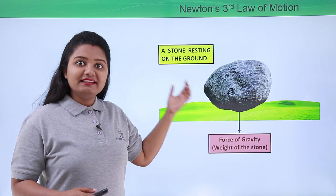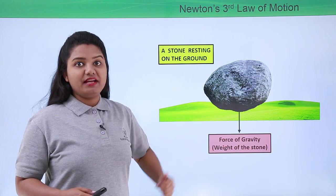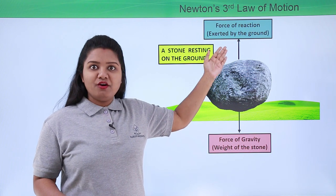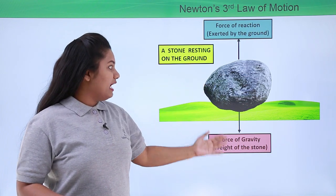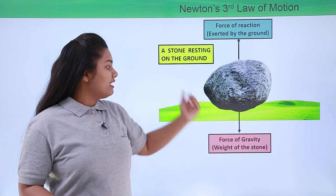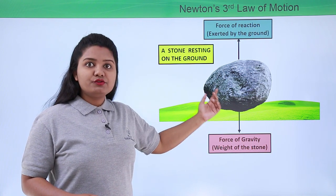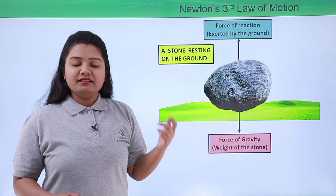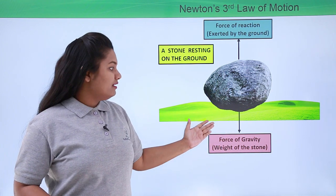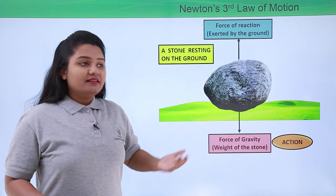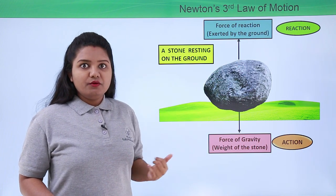This force is acting in the downward direction, towards the center of the earth. But still there is no movement in that direction. This is because there is another force which acts exactly opposite to this force of gravity, and this force is what we call the force of reaction. The force of gravity is what the stone exerts onto the ground, and the force of reaction is the reaction of the ground back to the stone. The force of gravity is the action force, and the force that the ground exerts onto the stone is the reaction force.